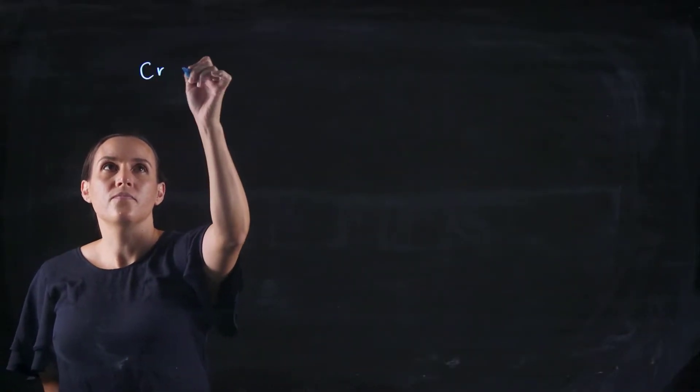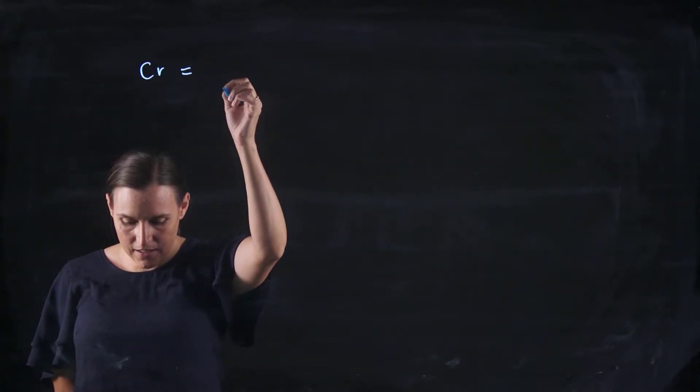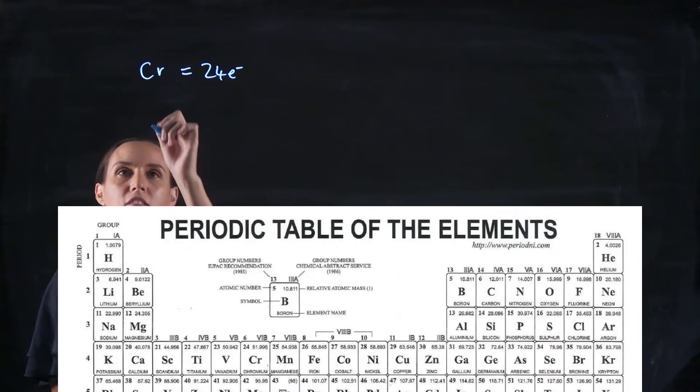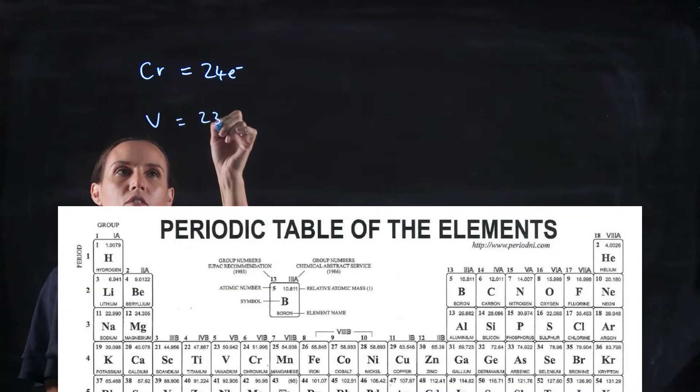So let's do chromium. Chromium has 24 electrons. And let's do vanadium that has 23 electrons.